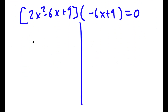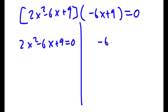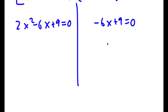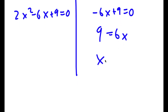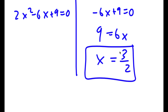So now this gives me two equations. I have 2x squared minus 6x plus 9 is equal to 0, and negative 6x plus 9 is equal to 0. For negative 6x plus 9 equals 0, I get 9 is equal to 6x, and x is equal to 9 over 6, which is equal to 3 over 2. So this is one solution of x.